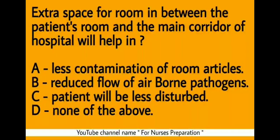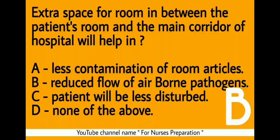Question 1. Extra space for a room in between the patient's room and the main corridor of a hospital will help in: Option A - Less contamination of room articles. Option B - Reduced flow of airborne pathogens. Option C - Patient will be less disturbed. Option D - None of the above. The right answer is Option B: reduced flow of airborne pathogens.